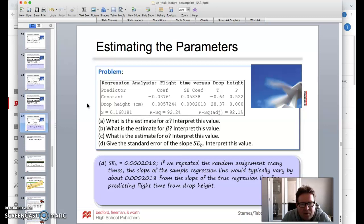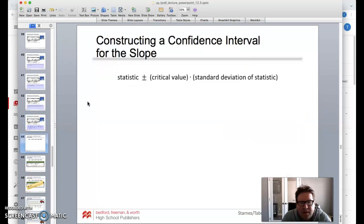For part D, give the standard error. The standard error is right here in that data print that we have. If we repeated the random assignment many times, the slope of the sample regression line would typically vary by about that much from the slope of the true regression line for predicting flight time and drop height. That's actually pretty good right there.